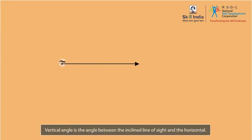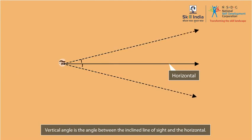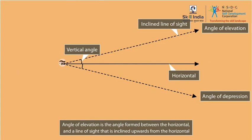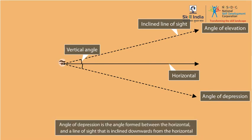We can define the vertical angle as the angle between the inclined line of sight and the horizontal. The angle formed between the horizontal and a line of sight that is inclined upwards from the horizontal is called the angle of elevation. The angle formed between the horizontal and a line of sight that is inclined downwards from the horizontal is called the angle of depression.